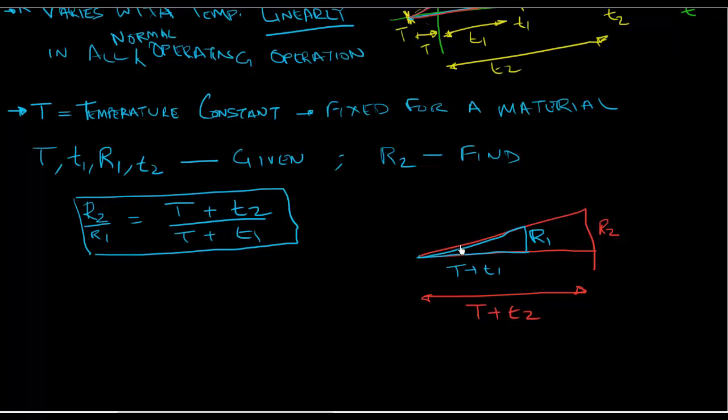Let us consider this angle here theta. What would be tan theta? Tan is opposite by adjacent. If I remember my trigonometry correctly. So in the small triangle it would be R1 over T plus T1. And in the larger triangle it would be R2 over T plus T2.